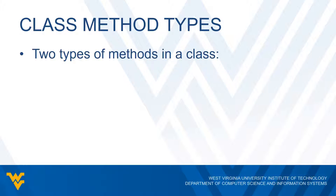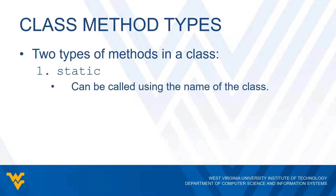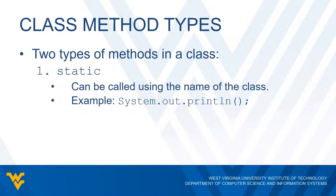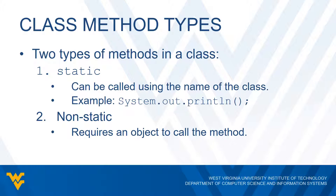Once we know which method we're dealing with, we have to recognize what type of method it is. There are two different types of methods in a class. First, we have what are called static methods — these mean that we can call the method by using only the name of the class. For example, System.out.println is a static method, and the name of the class in this case would be System.out. The other type is non-static. Non-static methods require an object to call the method. For example, nextInt would be a non-static method — we need to create an object of the Scanner class and then invoke this method on that object, so we'd need console.nextInt. We can't say scanner.nextInt; Java does not allow that.